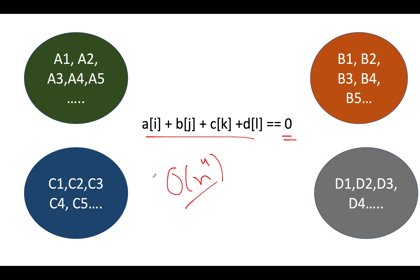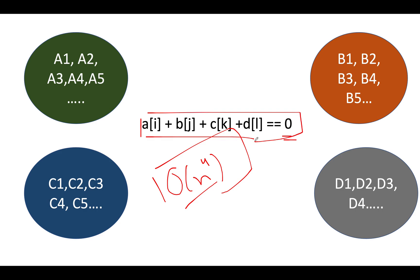You can create 4 loops — one for array a, one for b, then for c, then for d — and check if this equation is met, then increment your answer count variable. The time complexity for this approach would be O(n^4), which is too bad.